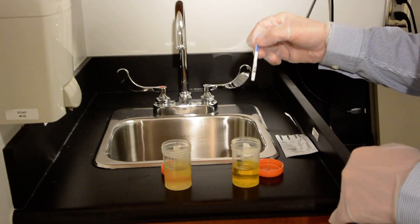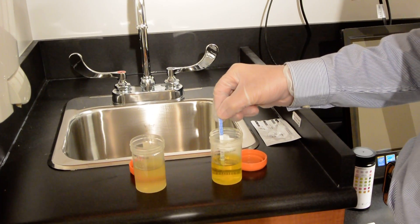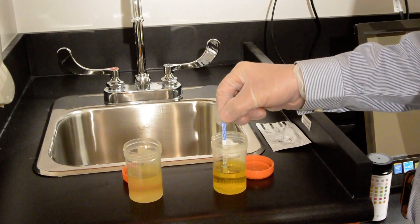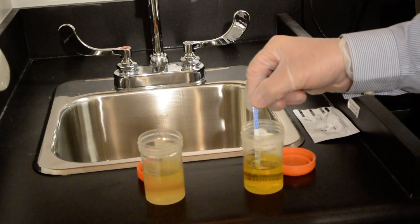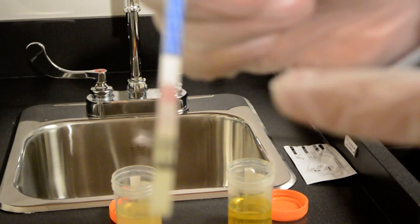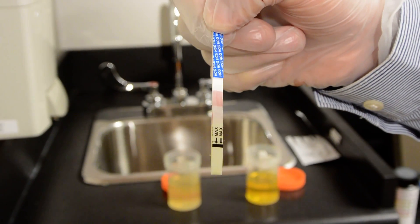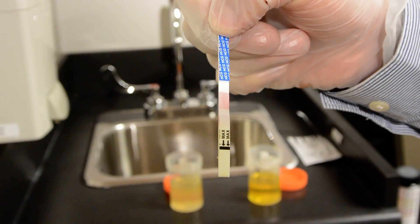So you take the stick and you put it inside the container, making sure not to go over the max line and you let the urine diffuse into the stick. As soon as you see color coming up then you can take it out of the urine sample and you wait.